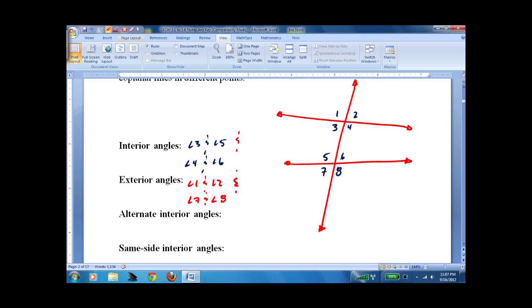Alternate interior angles, which have some interesting properties when we get to parallel lines. These would be angle 3 and angle 6. Also angles 4 and angle 5.